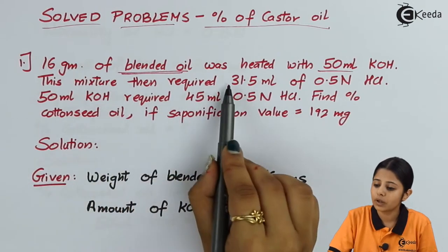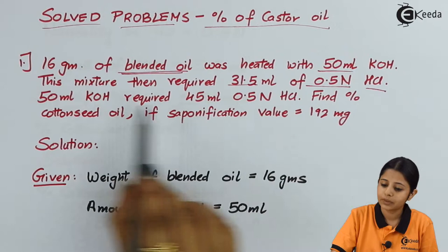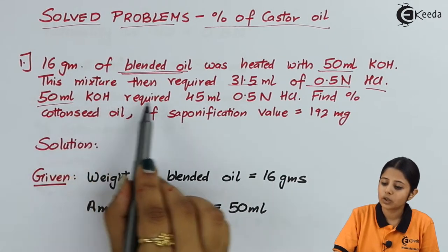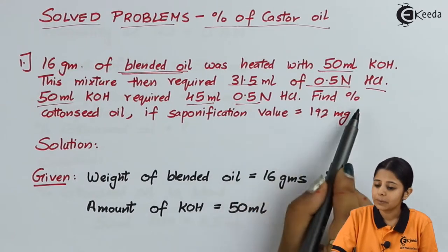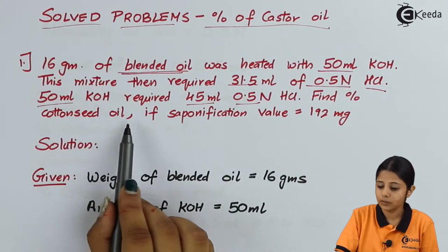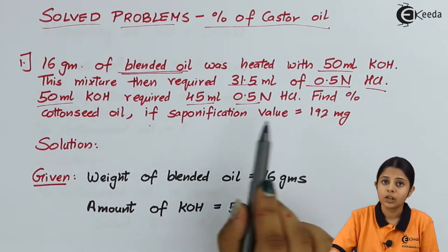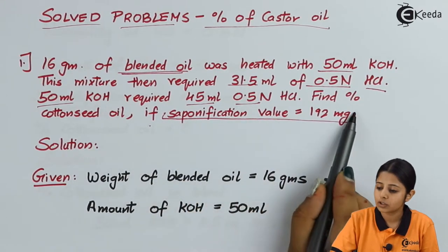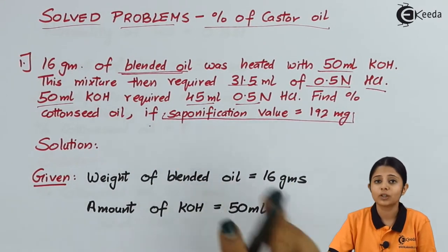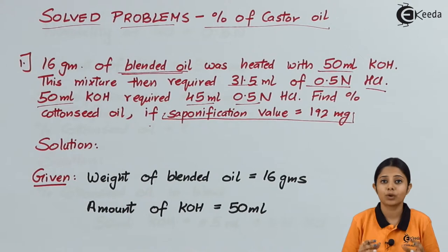This mixture then required 31.5 ml of 0.5 normal HCl. 50 ml KOH required 45 ml of 0.5 normal HCl. Find the percentage of cotton seed oil. Its saponification value is 192 mg. We understand that this is very important information because saponification value is what all questions ask us to find. Over here they have already given us the saponification value.